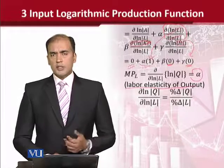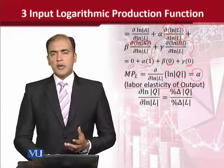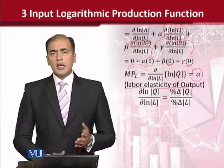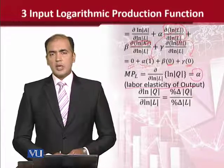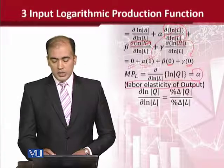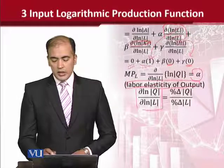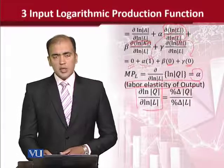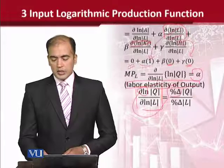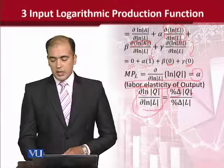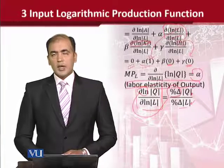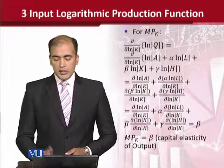This shows the elasticity of output as labor changes. One thing we can keep in mind as a rule is that if we find out the marginal products using the logarithmically transformed production function, then the marginal products we have show the output elasticity. The reason you saw this is that when you take the derivative of logarithmically transformed variables, it basically means percentage change — and when percentage change in the dependent variable divided by percentage change in the independent variable is calculated, that is elasticity.